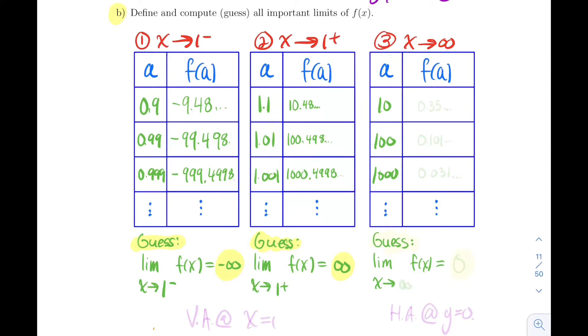Now for the next limit going to infinity. If you are computing outputs at 10, 100, and 1000, here are the outputs: 0.35, 0.01, 0.031. All these numbers are close to 0, getting closer to 0.